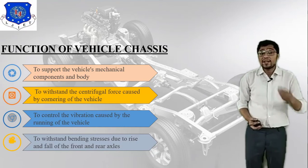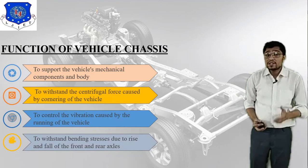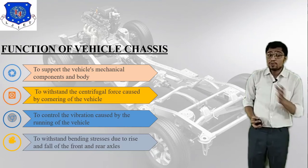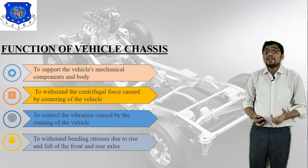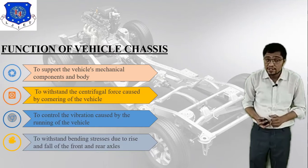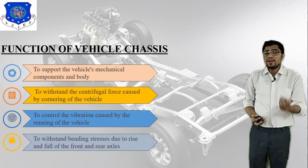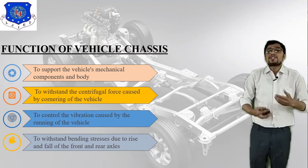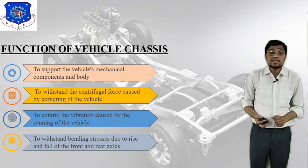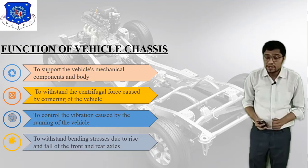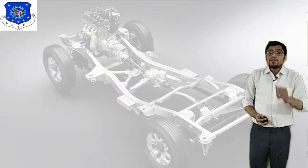The fourth function is to withstand bending stress. From a mechanical point of view, bending stress is very important — it is the stress due to the rise and fall of the front and rear axle. So the four functions of vehicle chassis are: support of mechanical components, withstand centrifugal force, control vibration, and withstand bending stresses.